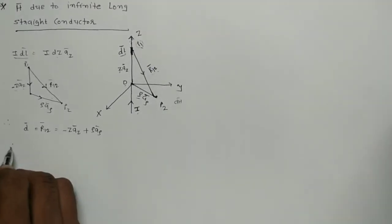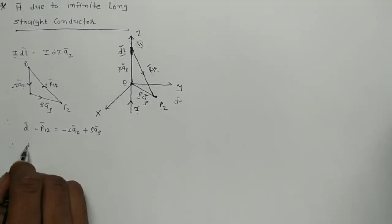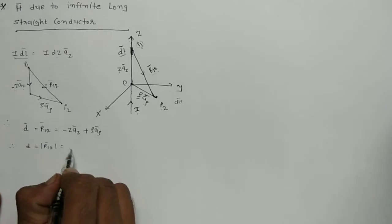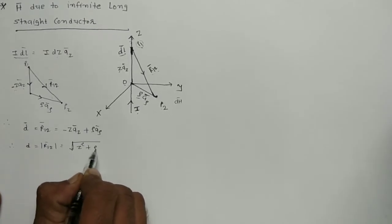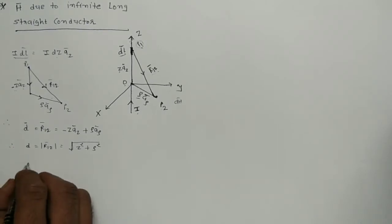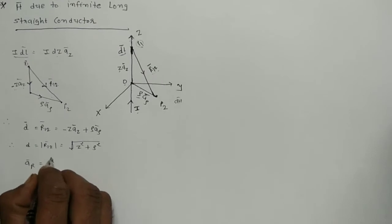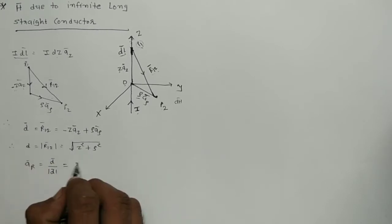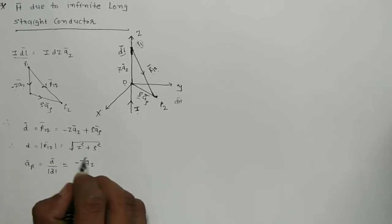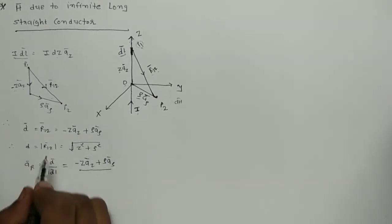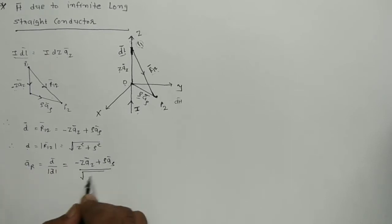Now find out the magnitude of the vector distance D. The magnitude |D| = |R12| equals √(Z² + ρ²). Now find out the unit vector Âr, given by D̄ divided by |D̄|. So Âr = (-ZÂZ + ρÂρ) / √(Z² + ρ²).